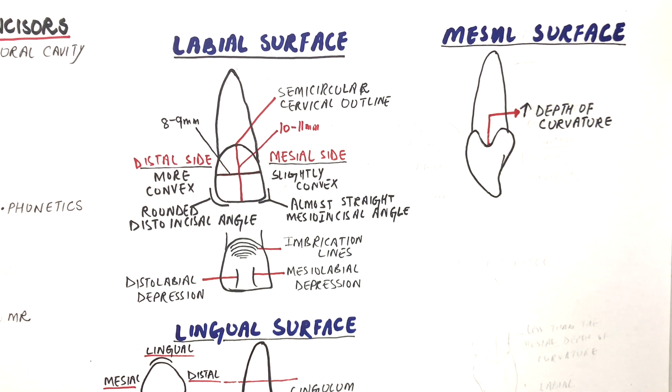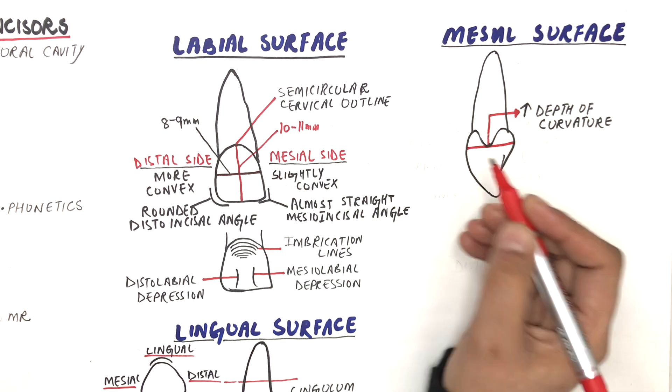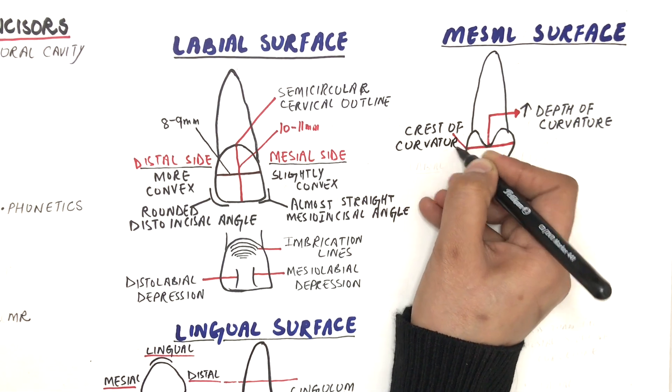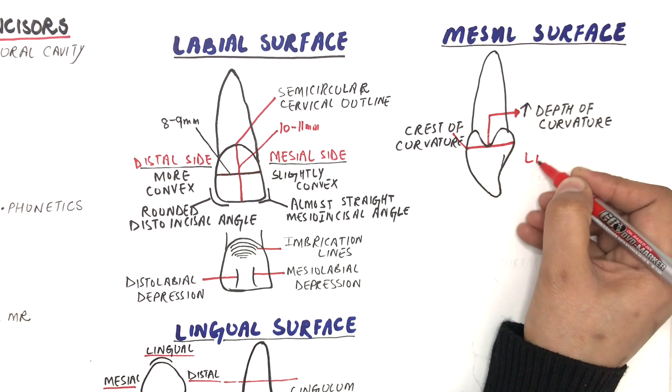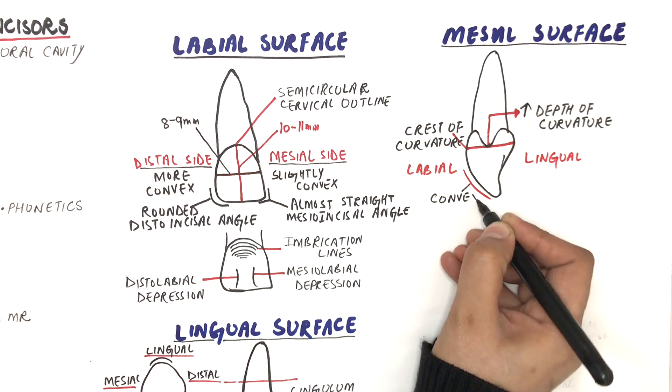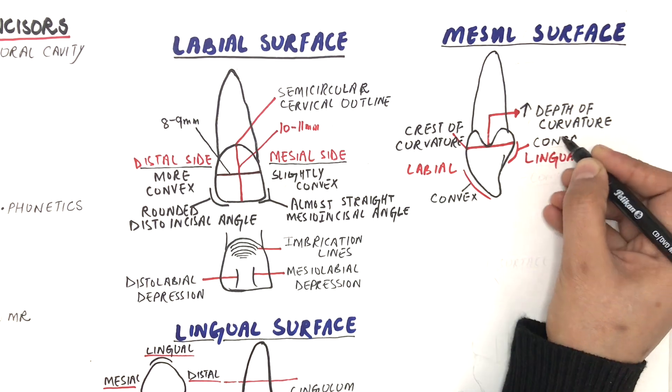The greatest measurement of the crown labiolingually from the mesial aspect is at the crest of curvature, immediately coronal to the cervical line. The crest of curvature is the highest point of the labial and lingual curves of the crown. Below the crest of curvature, the outline of the crown is convex labially, while it's convex and then concave lingually.